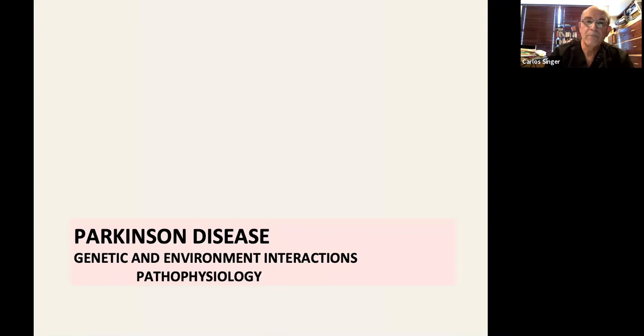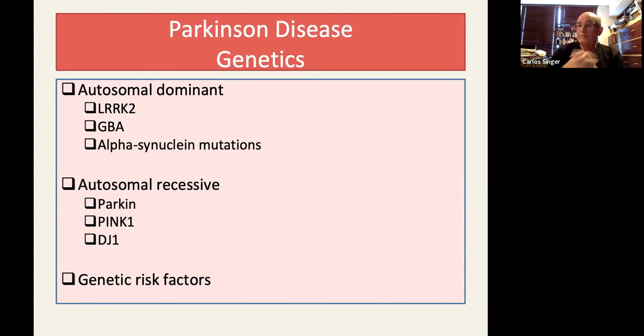So what about the etiologies that have a role in getting this whole process started? Well, there is genetics. And in genetics, we have a number of diseases that are familial. Only 10% of Parkinson's disease is truly, we can almost call it purely genetic or very much genetically determined.